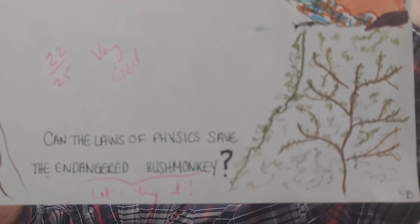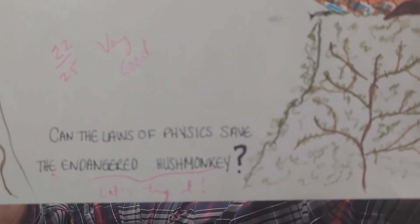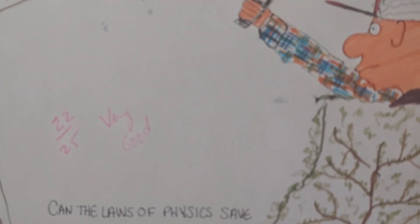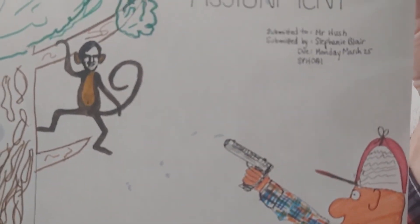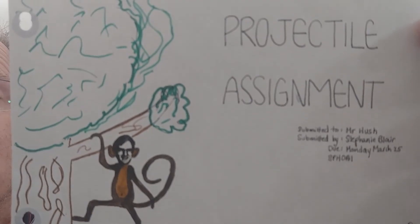And the question is can the laws of physics save the endangered hush monkey? And the answer is no. The laws of physics actually make the bullet go right through the monkey's tummy.